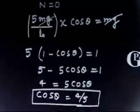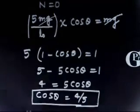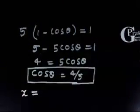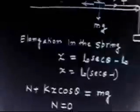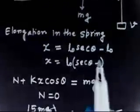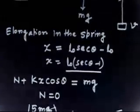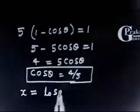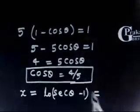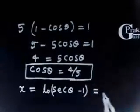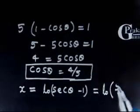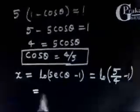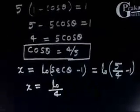Now that we know cos(theta) equals 4/5, we can find the elongation. x equals L0·(sec(theta) - 1) equals L0·(5/4 - 1), so the elongation x equals L0/4.